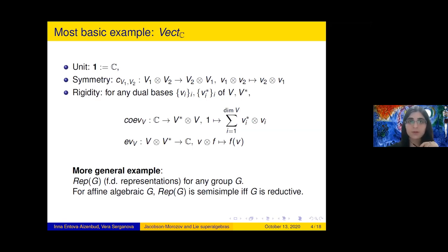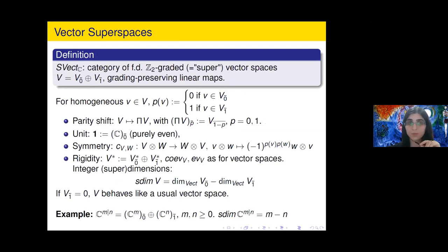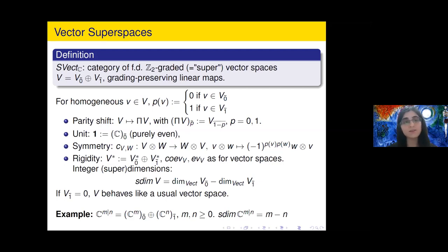Now let's move to the next example, most relevant for us today: vector super spaces. Super vector spaces are Z/2-graded vector spaces — whenever we say 'super' we mean Z/2-graded — denoted V with even part V₀ and odd part V₁. Vectors in the even part are called even vectors and those in the odd part odd vectors. Finite dimensional super vector spaces form a tensor category with grading-preserving linear maps. Let me denote by p(v) the parity of a homogeneous vector v.